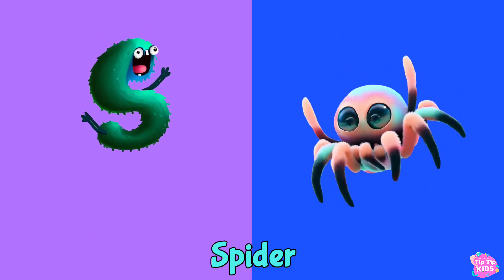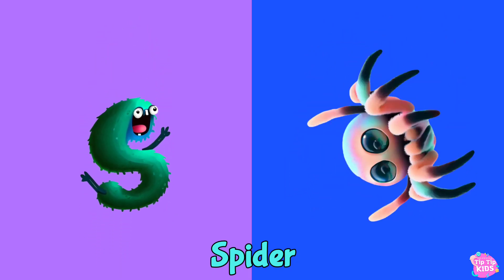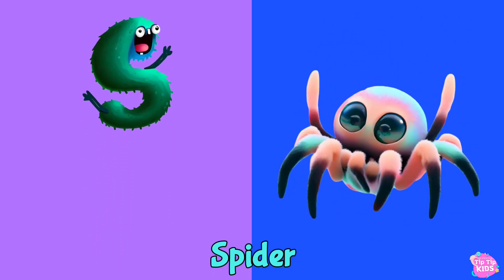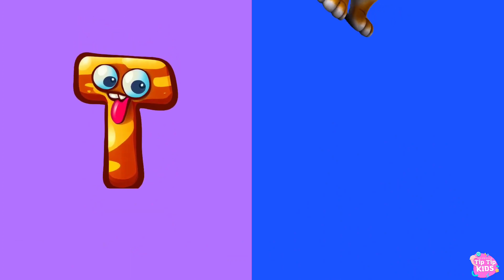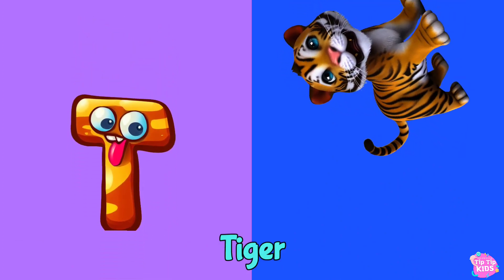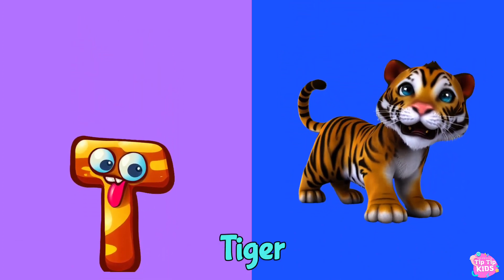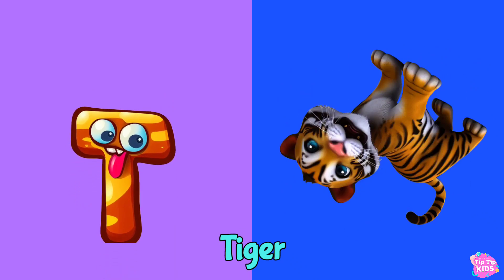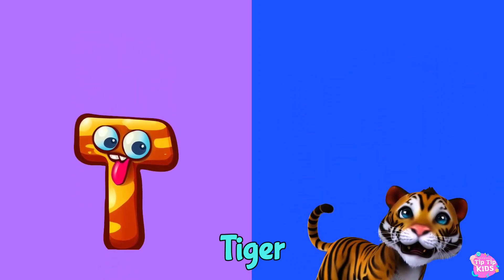Rainbow. S is for Spider. S, Spider, S, Spider, S. Spider. T is for Tiger. T, Tiger, T, Tiger, T. Tiger.